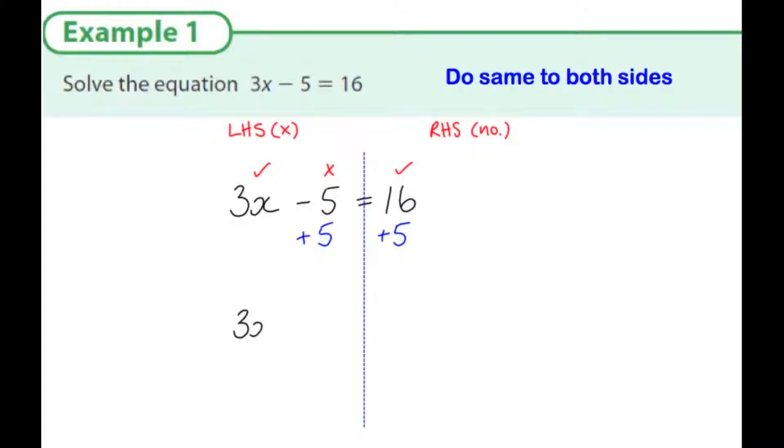If I add 5 to both sides, I still have 3x on the left-hand side. The minus 5 plus 5, well that equals 0. And the left-hand side equals 16 plus 5, which is 21. So this is a new statement that's true.